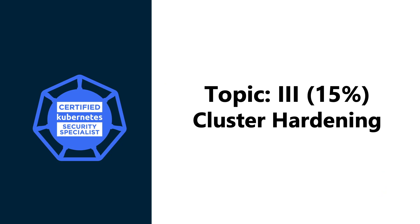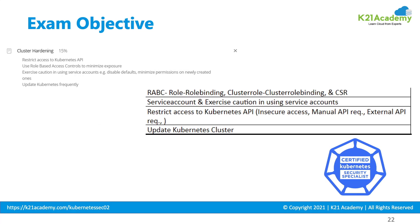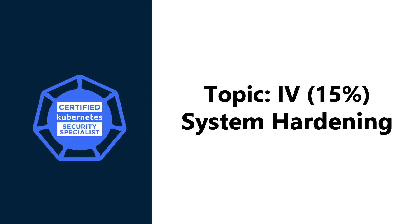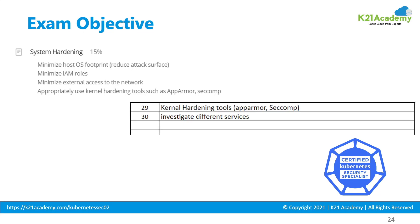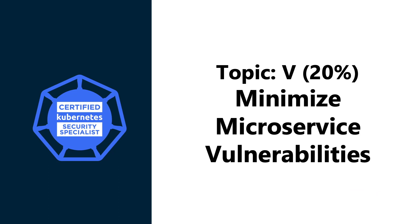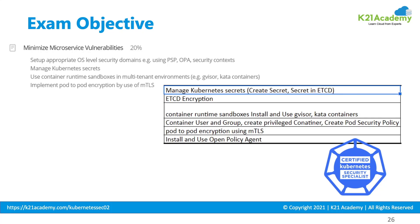Topic 3: Cluster Hardening, weighed at 15%, includes role-based access control, restricting access to the Kubernetes API, and updating Kubernetes. Topic 4: System Hardening, weighed at 15%, covers use of kernel hardening tools and reducing attack surfaces. Topic 5: Minimizing Vulnerability of Microservices, weighed at 20%, covers managing secrets, setting up security domains, and implementing port-to-port encryption.